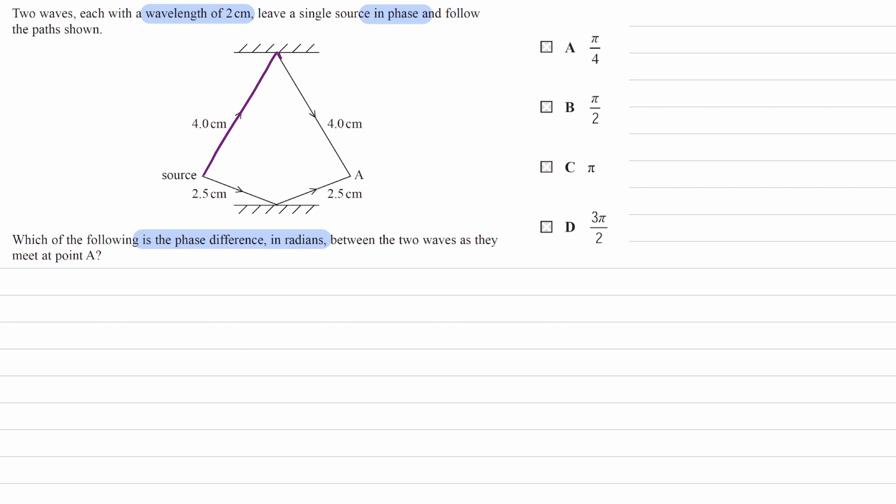And then you can see from this path that the total length travelled by that wave is 8 cm. And then we have the bottom path that reflects off that bottom surface and then meets at point A. And that length, add up to two 2.5s, that gives 5 cm.